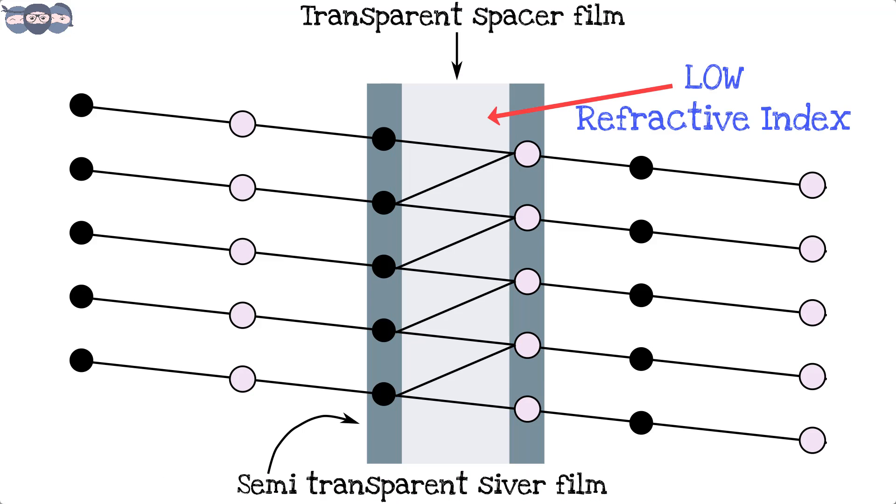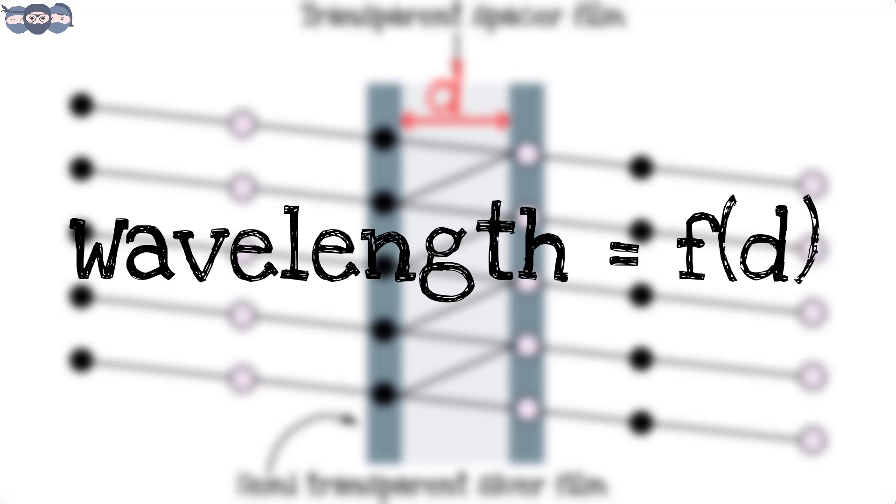The spacer film has a low refractive index and the thickness of spacer film determines the wavelength of the light that would be transmitted.